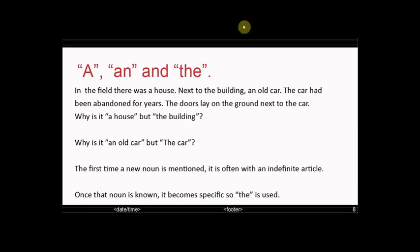So, in the field there was a house. Next to the building, an old car. The car had been abandoned for years. So why is it a house but the building? Why is it an old car but the car? The first time a new noun is mentioned, it's often with an indefinite article. But once the noun is known, once you're aware of this article, the house or a house becomes the building because you know of it. An old car becomes the car because now you know of this noun.